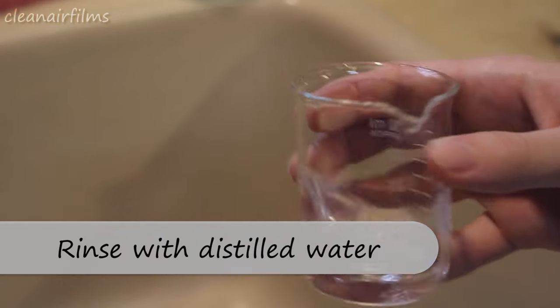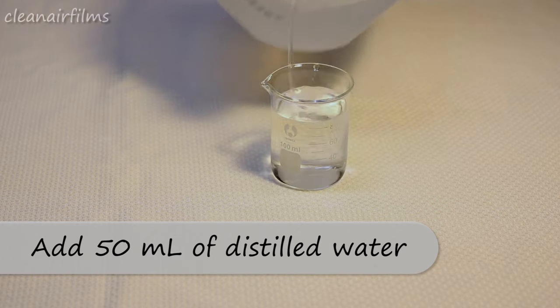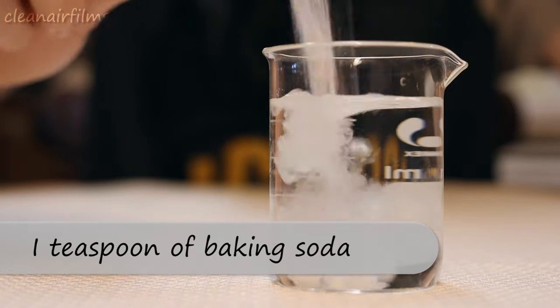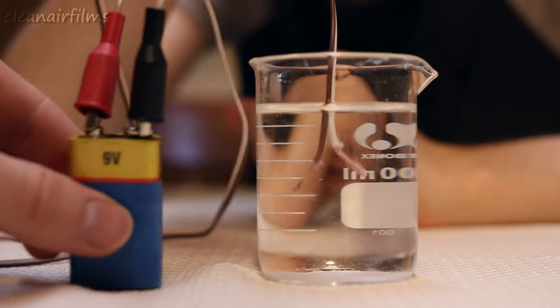Now rinse out your beaker with distilled water. First, put 50 more milliliters of distilled water into your beaker. Now add one teaspoon of baking soda. Give it a stir. Now stick the wires in it.